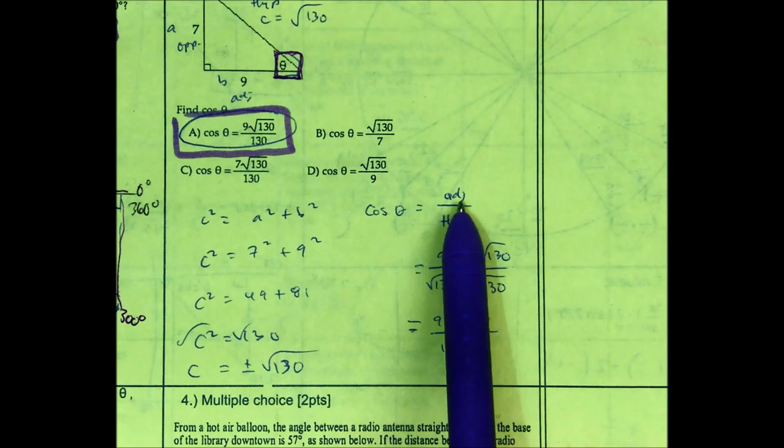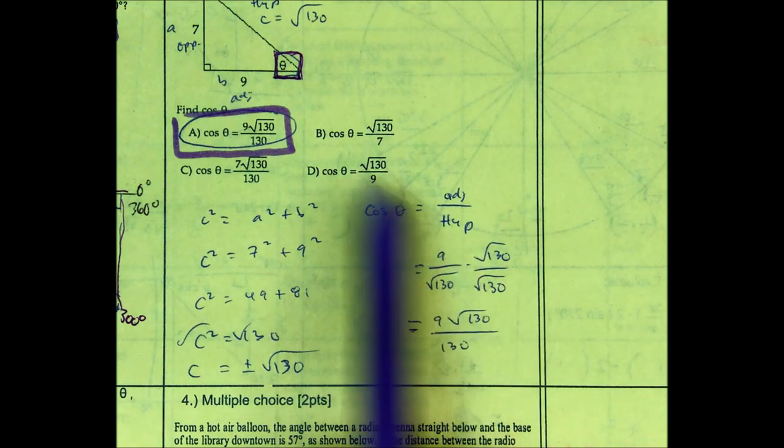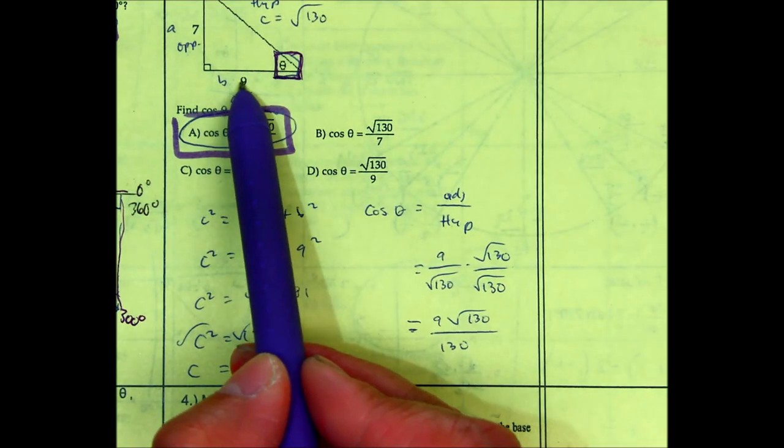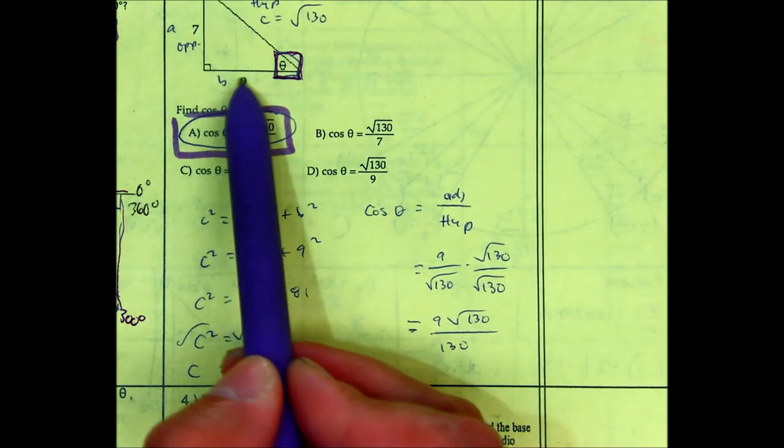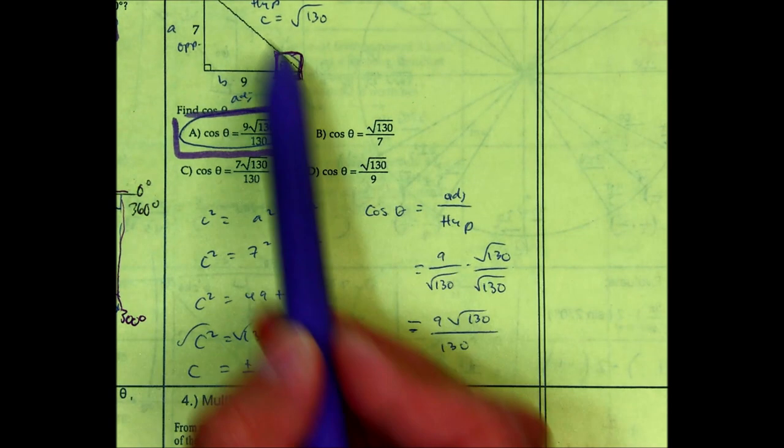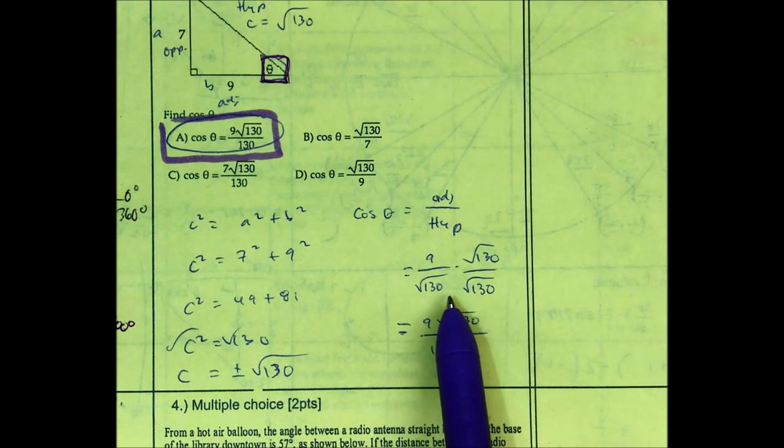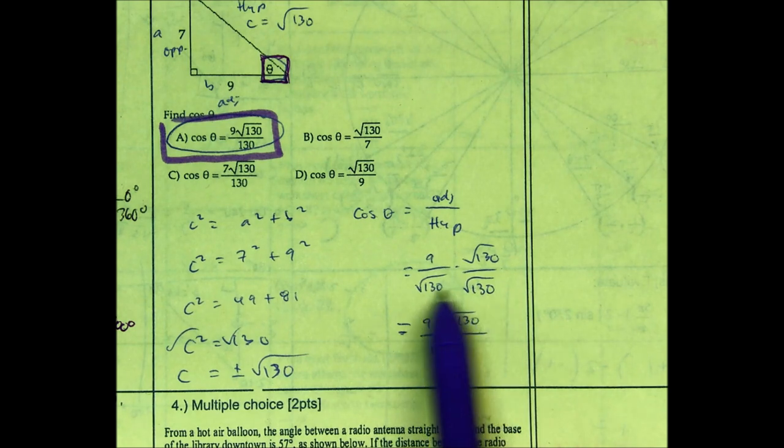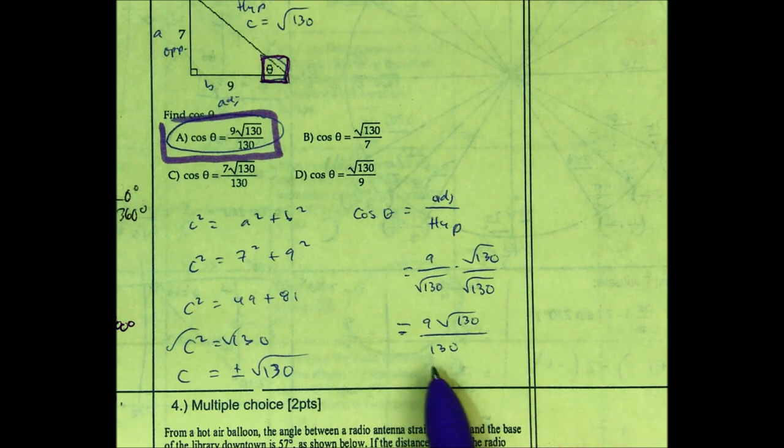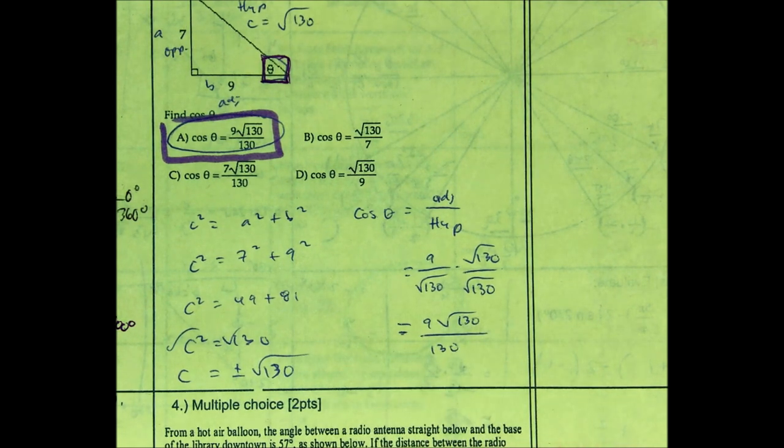Cosine is the adjacent over the hypotenuse. So, the adjacent side closest to this angle is... Well, you have two sides that are adjacent. This one is the adjacent because this is the hypotenuse. So, 9 over radical 130. Can't leave it like that, so you are going to rationalize. Take this number, write it twice. Here, you get 130 and then numerator 9. 9 radical 130 over 130. And that would be choice A is your correct answer.